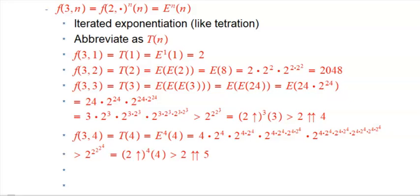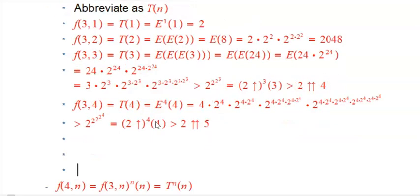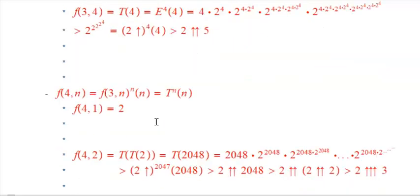At this point, we've gotten up to the level of iterated exponentiation, which is sometimes called tetration or uses a double up-arrow notation. I'm going to abbreviate that occasionally as T when it comes up in various contexts. We've started with successor, and all we've done is a simple recursion idea: the next function is defined in terms of the previous function, iterating it where the number of iterations is the input number. So we can keep doing that and get past the double up-arrow.